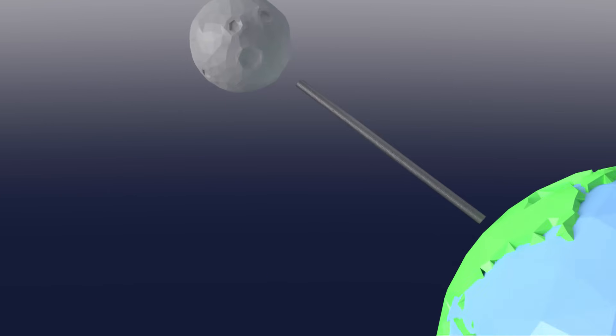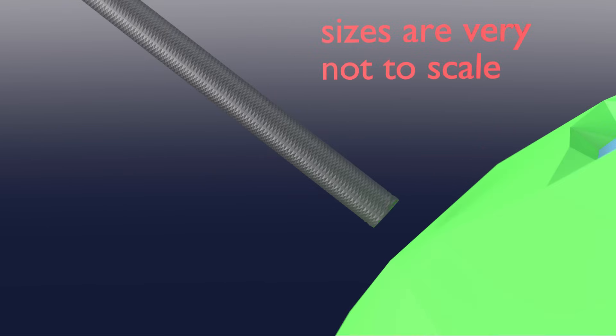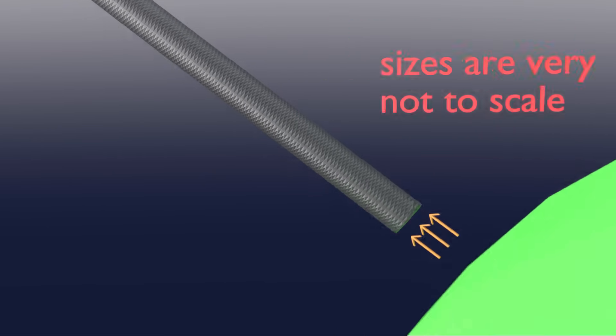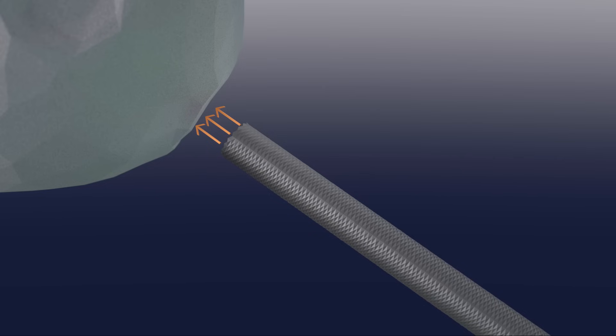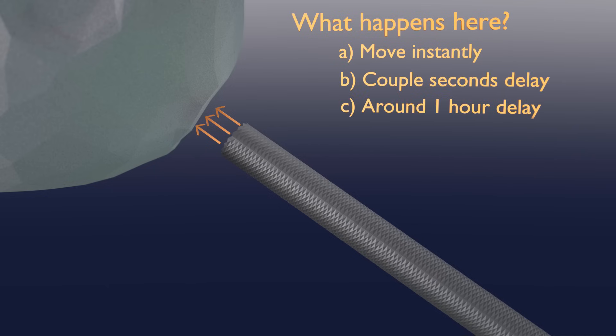Let's pose this question. If we were to raise the earth side of the bar by one meter, what would happen to the far moon end of the bar? Would it move a meter instantly? Would there be a couple seconds delay? Possibly an hour delay, or maybe much longer delay?